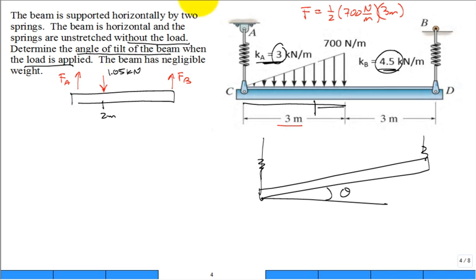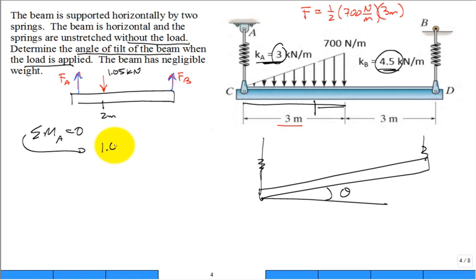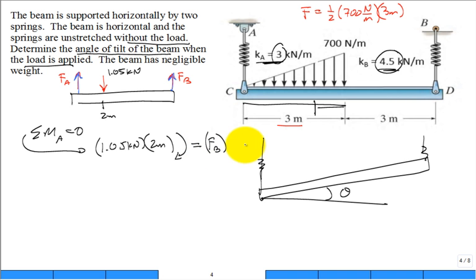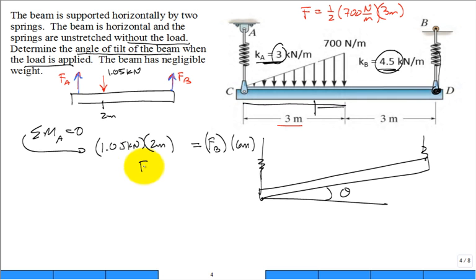To solve for F_A or F_B, take the sum of the moments about point A, which must equal zero. That gives an equation: 1.05 kilonewtons times its moment arm of 2 meters makes it want to rotate clockwise. The balance is F_B with its moment arm distance of 6 meters, attached out at D pulling upward, rotating in the opposite direction. One equation, one unknown — putting it on the other side avoids the negative sign.